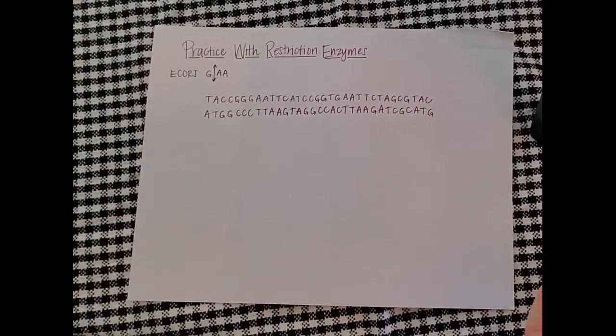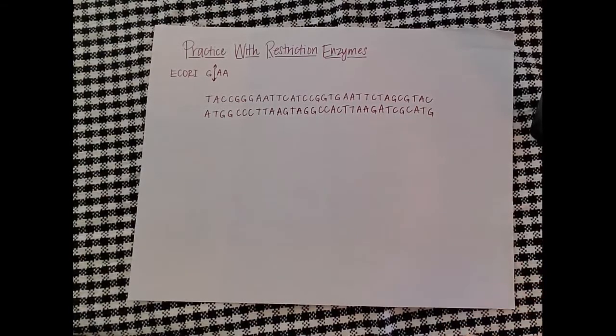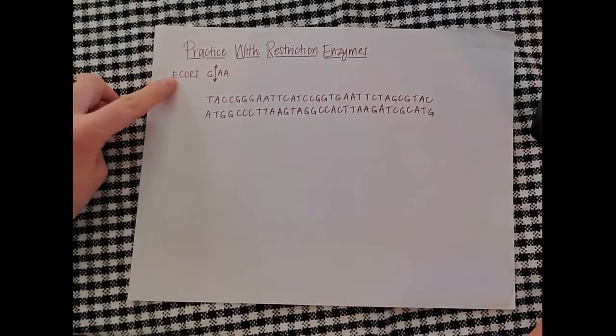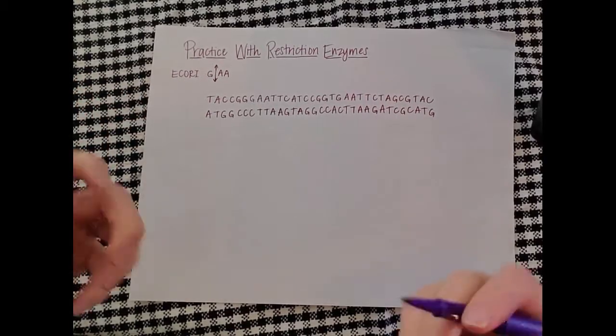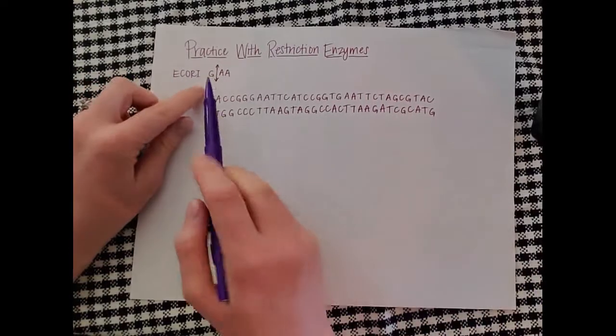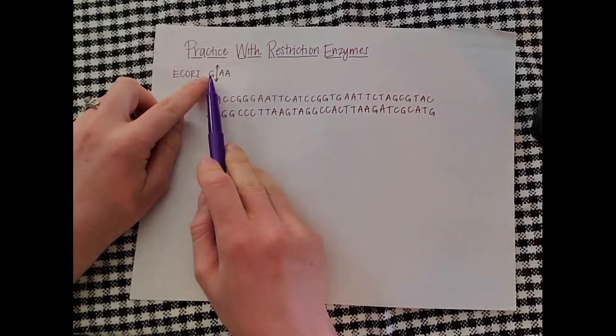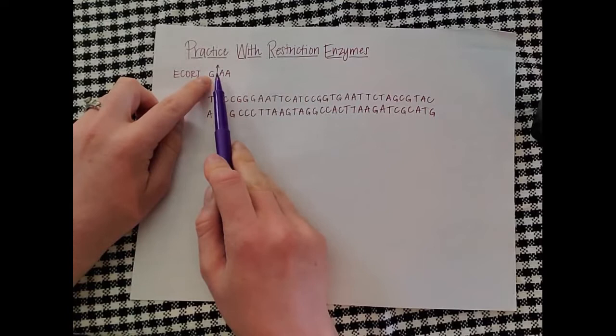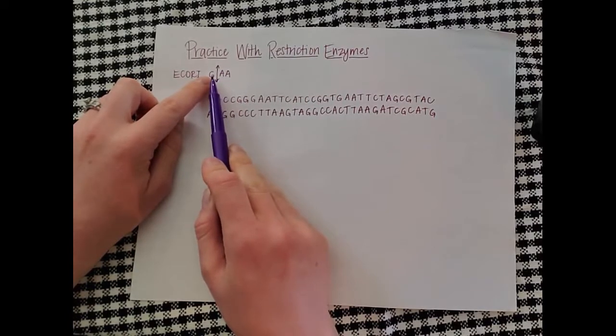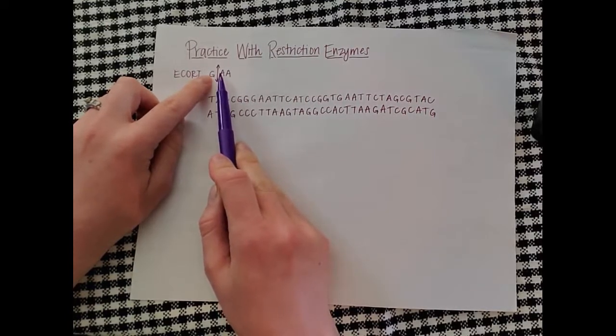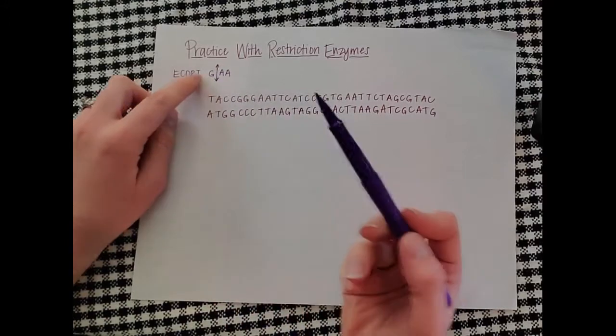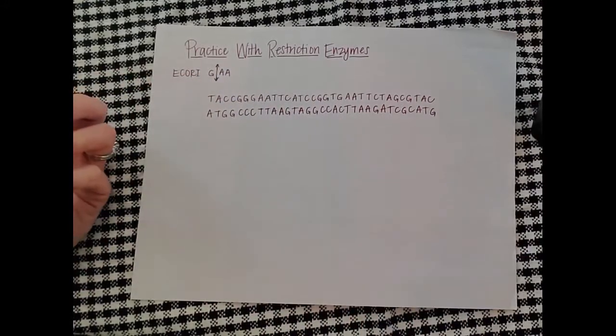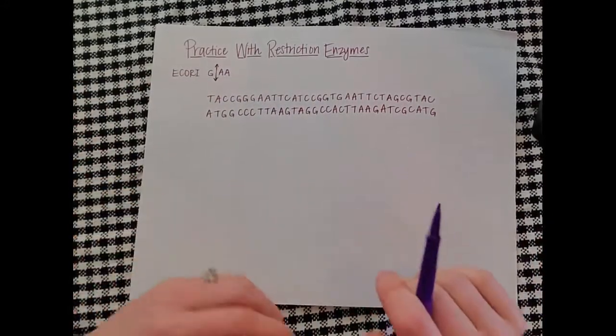All right, so we're practicing with restriction enzymes today and the one we're going to be using is EcoRI. EcoRI cuts in a very specific place. It's going to cut every time it sees a G and then an A and an A. It's going to cut between the G and the first A. Now it will not cut just between GA. It has to have that second A present. So anytime we see that we're going to go ahead and cut through each strand of DNA.